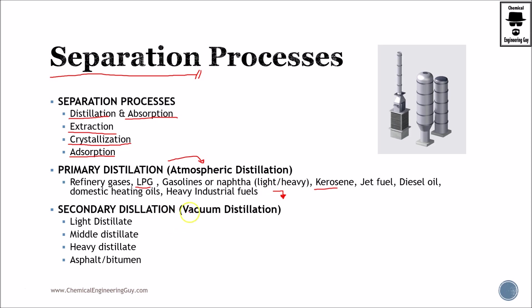These residues go to the vacuum distillation, which is the secondary distillation. Here we're going to produce light distillates, middle distillates, heavy distillates, and the further residue is going to be converted into asphalts, bitumen, waxes, and so on.